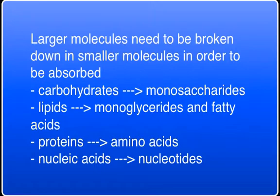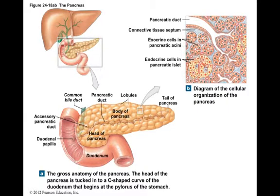Carbohydrates need to be broken down into monosaccharides. Lipids need to be broken down into monoglycerides and fatty acids. Proteins need to be broken down into amino acids, and nucleic acids into nucleotides. In these smaller units, they can be more readily absorbed across the epithelium of the digestive tract. Essentially, the pancreas provides the enzymes required to break down all the macromolecules.